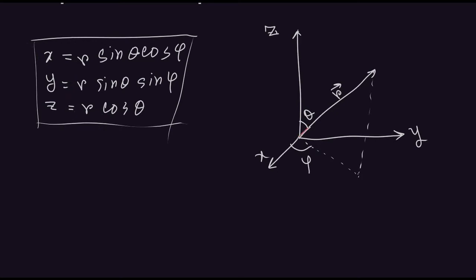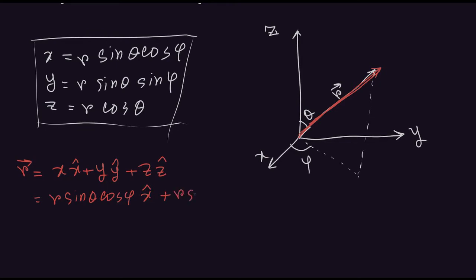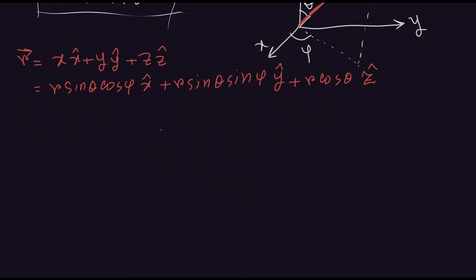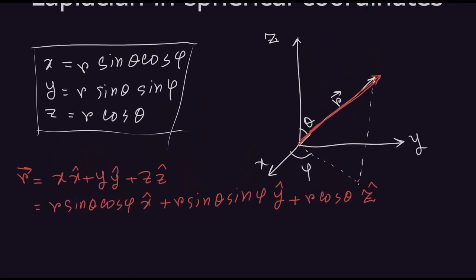We have a position vector over here, which we can write in Cartesian form. We use the definition of x, y, and z, where x is r sine theta cosine phi, and this is the unit vector along the x direction.